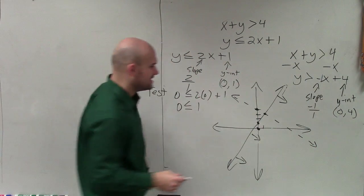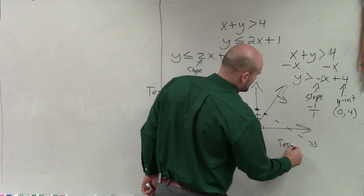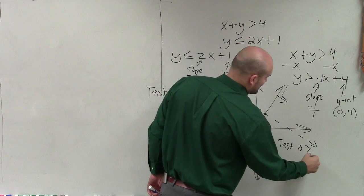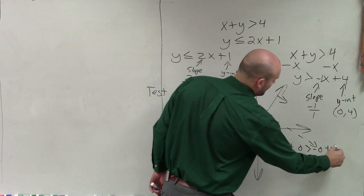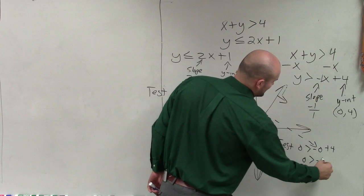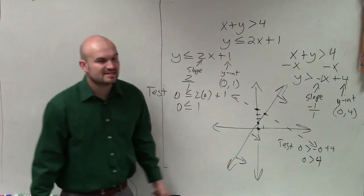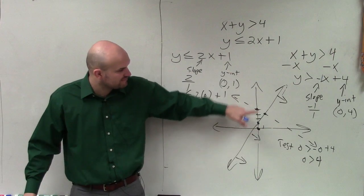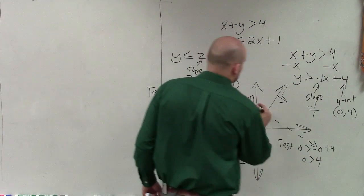Then we go ahead and test that one. I say test: 0 is greater than negative 0 plus 4, which is 0 is greater than 4 - obviously false. Since the test point is false for this line, I shade above.